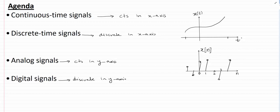A small observation: t has units of seconds, while small n is a unitless quantity, but we use the word 'sample' to make it convenient to understand. Another important observation is that t is a real number, and n is always going to be an integer — it could be minus 2, minus 1, 0, 1, or any integer, but it cannot take any value other than an integer. This will become clearer when we go into the concept of sampling.